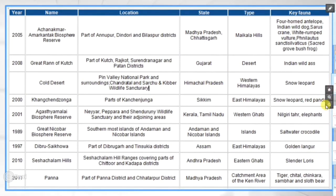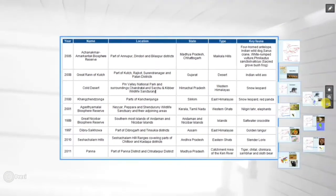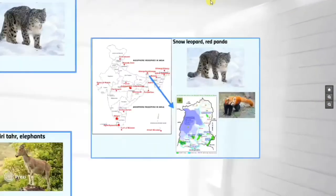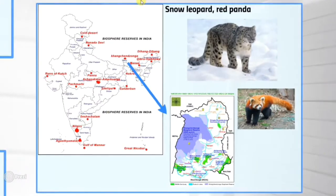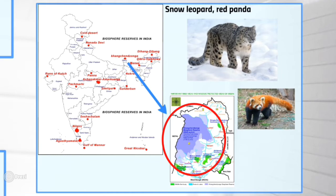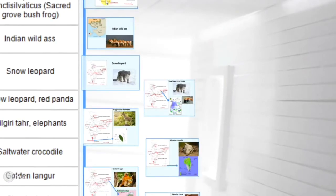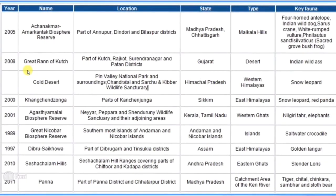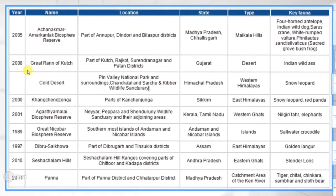Next is Kanchenjunga Biosphere Reserve. It is located in Sikkim.